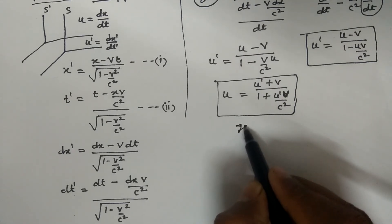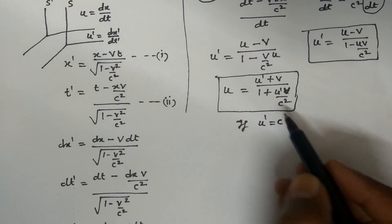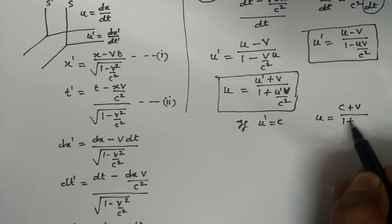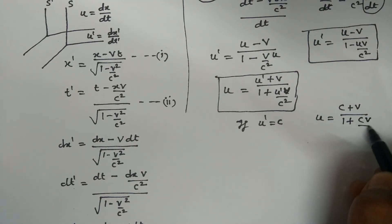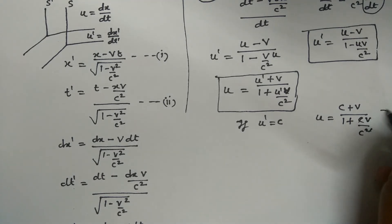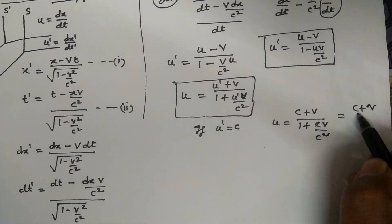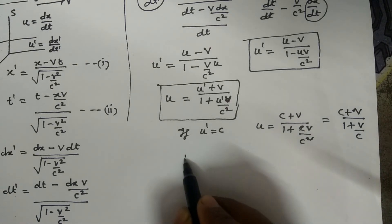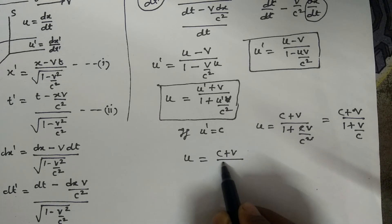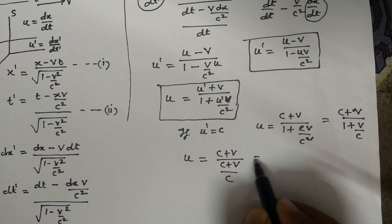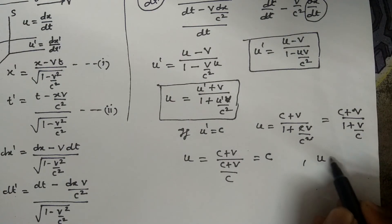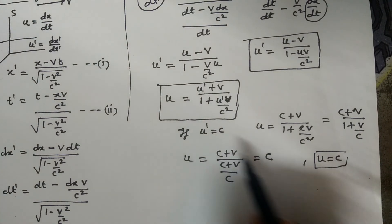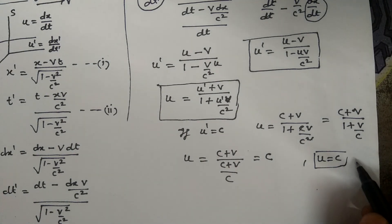If u-dash equals C, then substituting: u equals C plus V upon 1 plus CV upon C-square. The C cancels in the denominator, giving u equals C plus V upon 1 plus V upon C, which equals C times (C plus V) upon (C plus V), and it becomes equal to C. This means if the velocity of light in frame S-dash is C, then the velocity of light in frame S is also C.